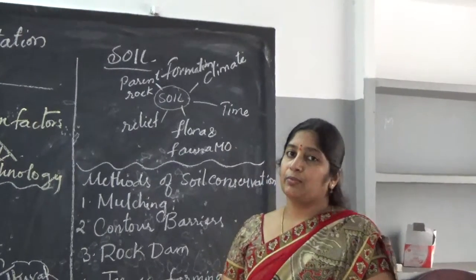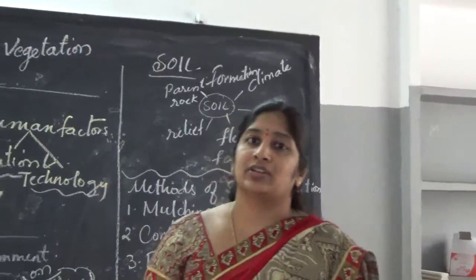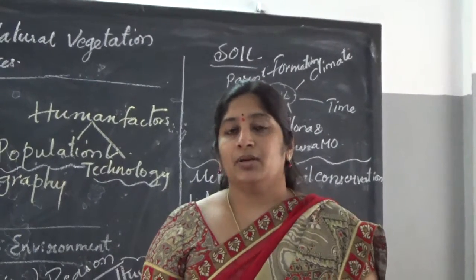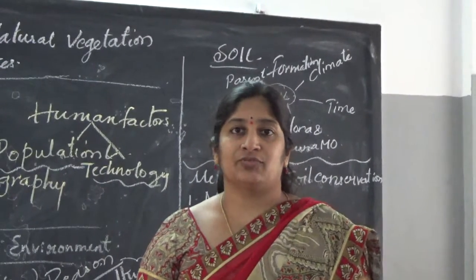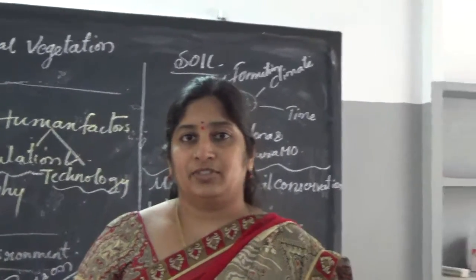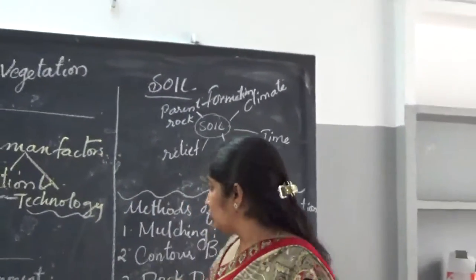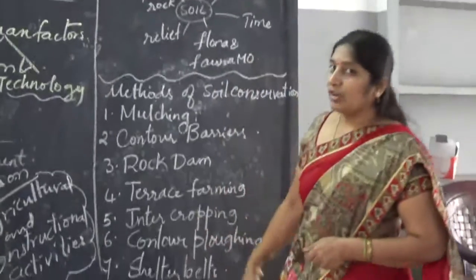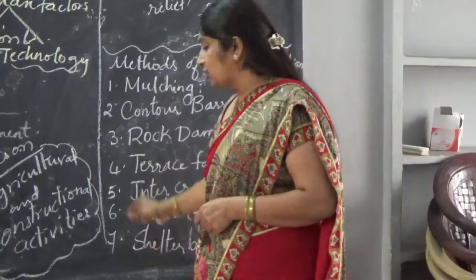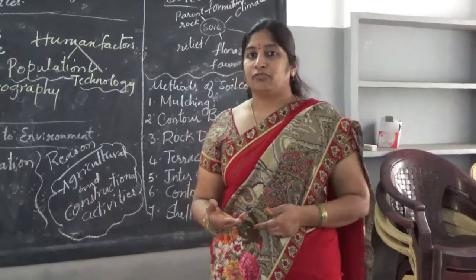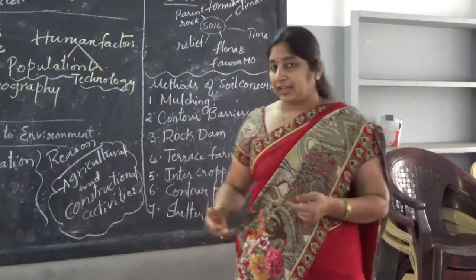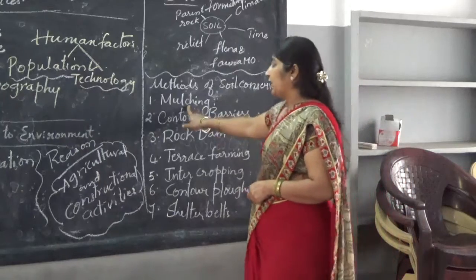Soil is also very important to grow crops. As we know, it is a very important natural resource and it will take millions of years to form such fertile soil. So we need to conserve soil. There are certain methods of soil conservation. First one is mulching — it is a process adopted by farmers or agricultural activities. Mulching is a method where straw is used in between the plants on the bare ground. This straw is kept on the ground in order to maintain soil moisture.